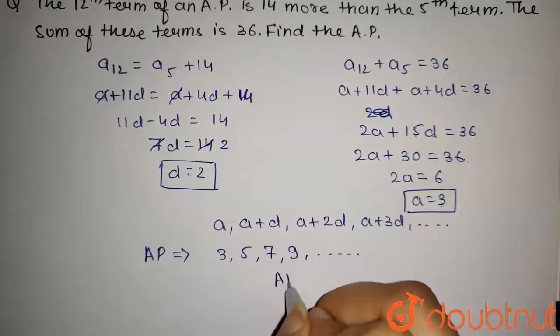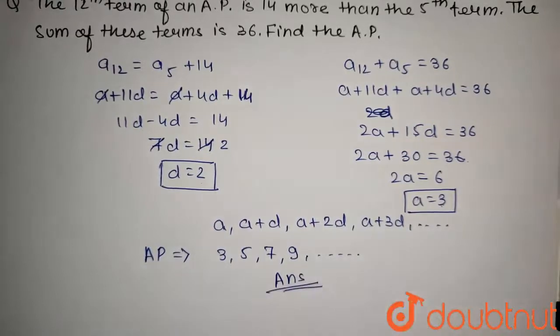So, this is the answer of the question, that the AP is 3, 5, 7, 9, and so on.